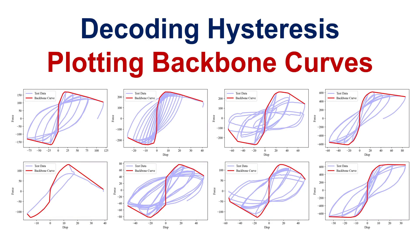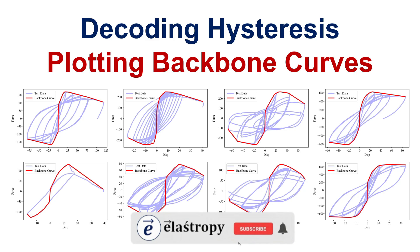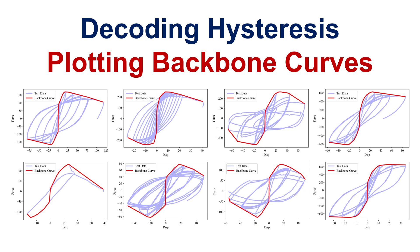Welcome back to our channel. Today we are going to explore the entire process of drawing envelope curves, also known as backbone curves, over cyclic force-displacement hysteresis loops obtained from pushover analysis. Instead of showing each individual hysteresis loop, a backbone curve effectively captures all the key points on the hysteresis loop to provide a simplified yet informative view of structural response when evaluating multiple structural responses, such as those obtained from experimental and numerical studies or design alternatives.